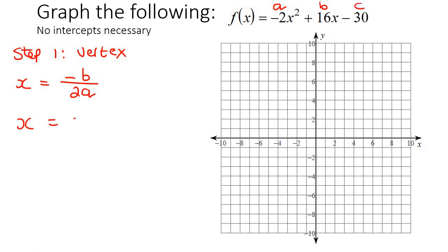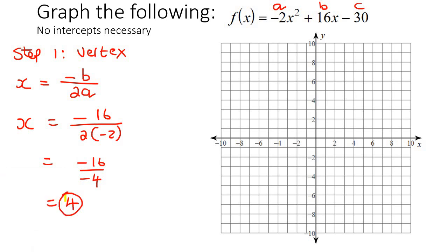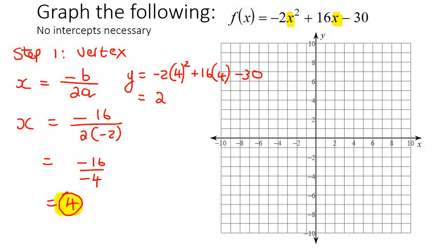So that's going to be x equals negative — now b is 16 and a is negative 2 — so that's going to be negative 16 over negative 4, and that gives us a value of 4. So we know the x value of our vertex, but we also need the y value. To find the y value, it is so easy. You take this x value, which is 4, and you just plug it into the equation. So to find the y value, you have negative 2 times 4 squared, plus 16 times 4, take away 30. And that is going to end up giving us 2. So the x value is 4 and the y value is 2.